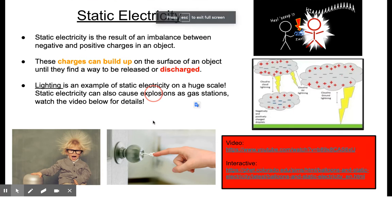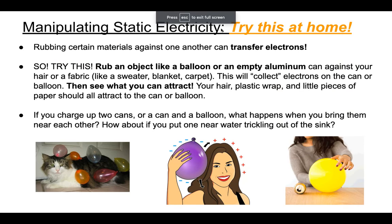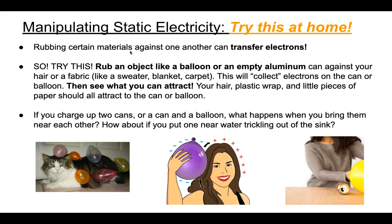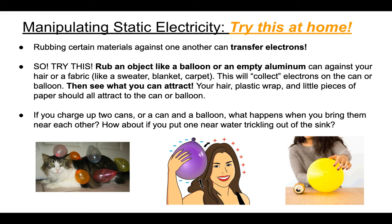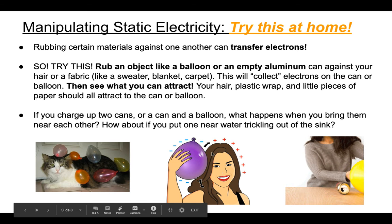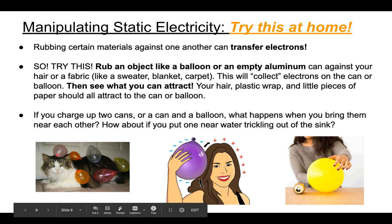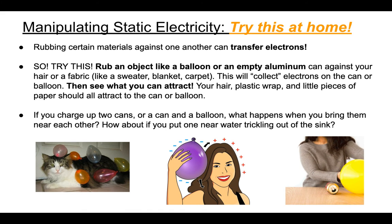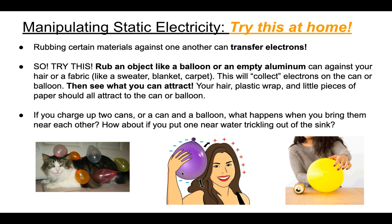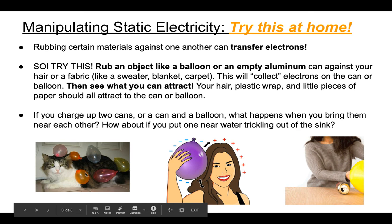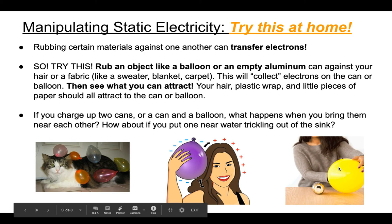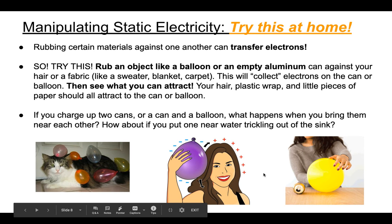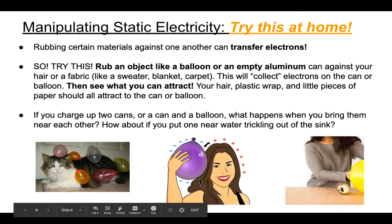Okay. All right. So in your own house, you can actually manipulate static electricity safely. So by rubbing one material against another, you can transfer electrons. Now, usually you're going to find like a loose material, like hair. Like a lot of little fibers and a lot of surface area, or fur, or like a fluffy sweater or a carpet. So something with fibers on it that you can rub the electrons off of that high surface area. And then see what happens. Notice, sticking to the poor cat, if you charge up a balloon and a can, you can actually kind of get them to attract to each other. So try that out.